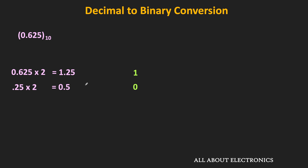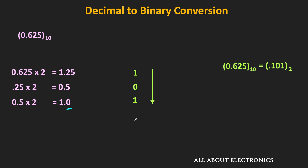Once again, multiplying 0.5 by the factor of 2 gives 1. The integer part is 1 and the fractional part is 0. Since the fractional part is 0, there is no need to carry on this multiplication. Writing the integer parts from top to bottom gives the binary equivalent of 0.625, which is equal to 0.101.